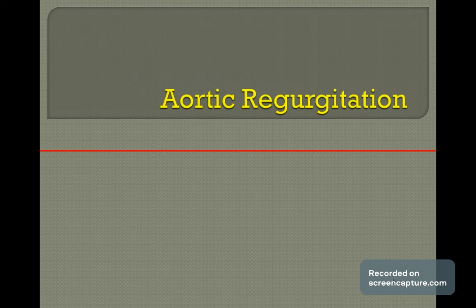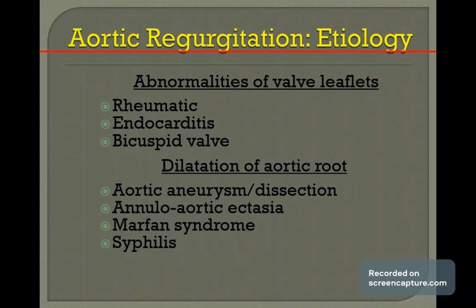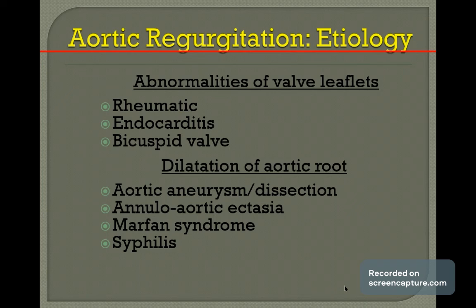Aortic regurgitation means aortic insufficiency. Aortic regurgitation is an abnormality of the leaflets, or it may be an abnormality of the aortic root. So we can classify the etiology into two: abnormality of the leaflets and dilatation of the aortic root.